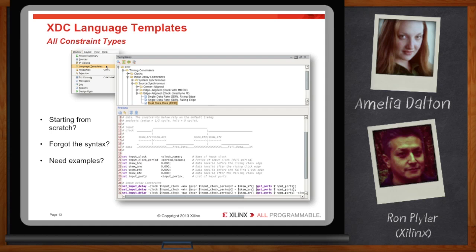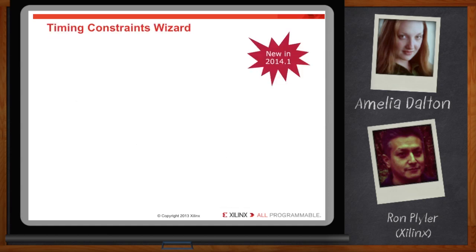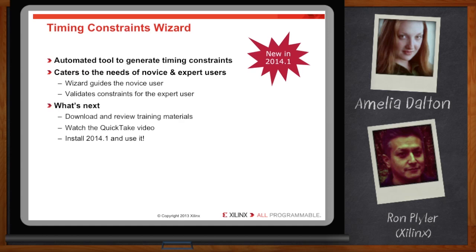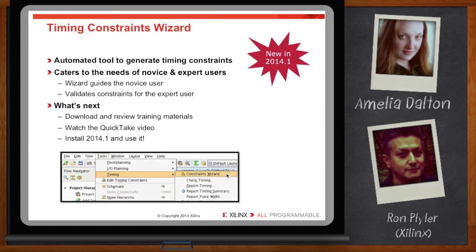We've tried to make it even easier to set up constraints. The timing constraints wizard is a new feature in the 2014.1 Vovato release. The wizard brings even more automation into setting up constraints and making sure they are complete. It is not only useful for guiding novices, but also good for validating constraints for expert users. There are existing materials on the timing constraints wizard and a new quick take video on Xilinx.com. A very good way to find out more is to actually use it in the new 2014.1 release.